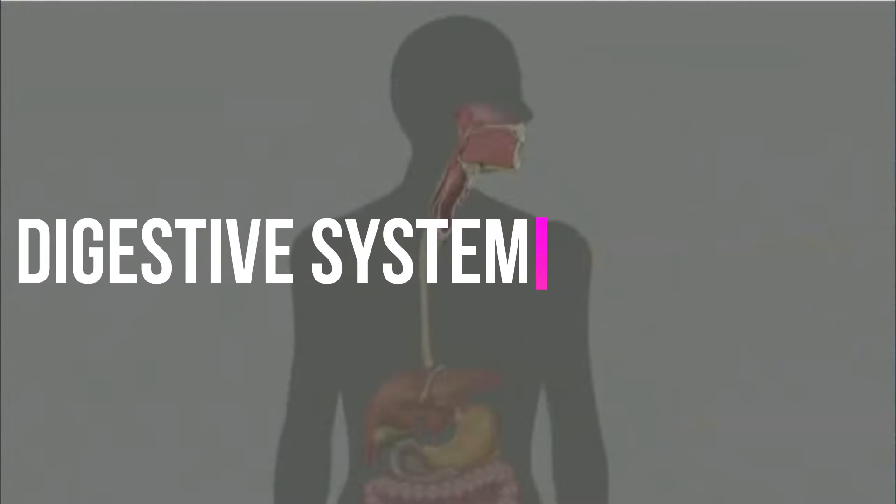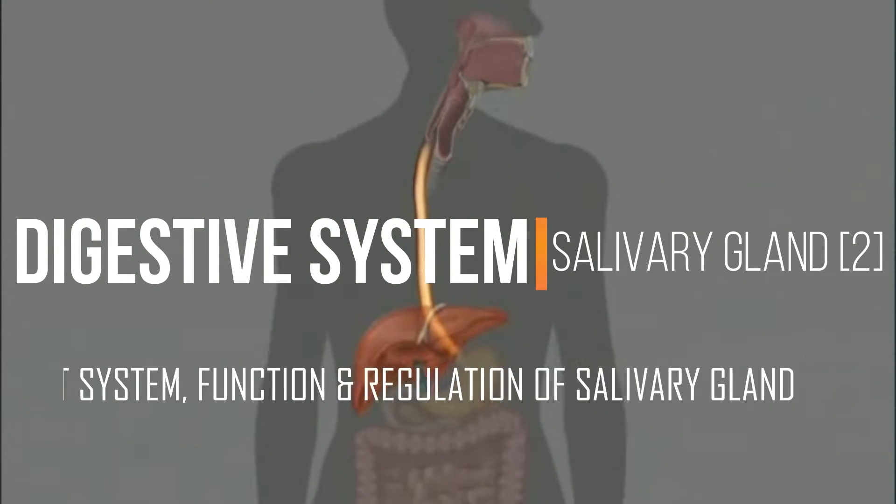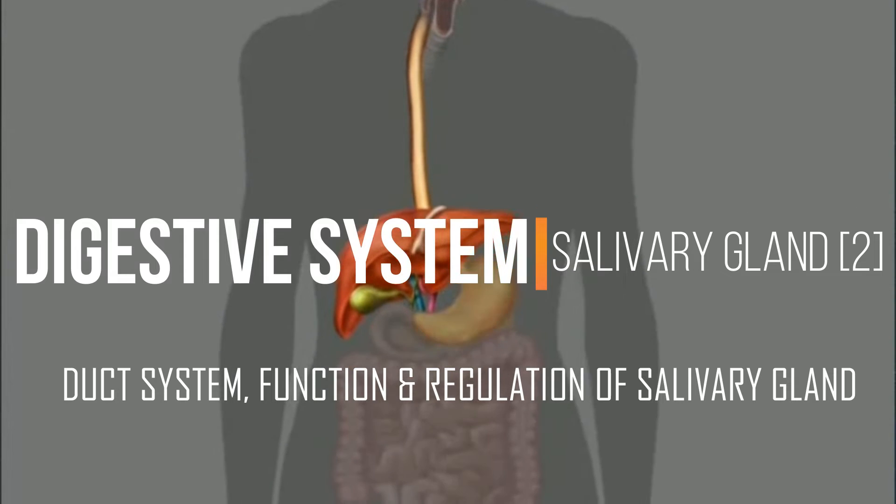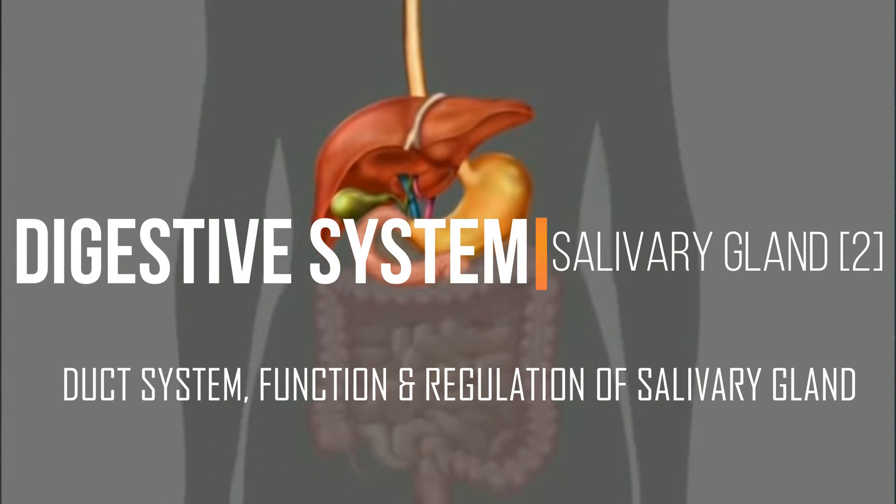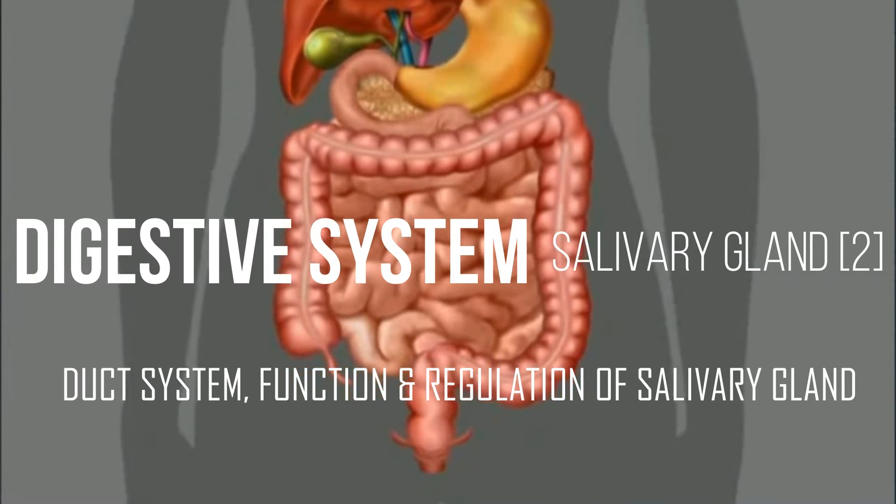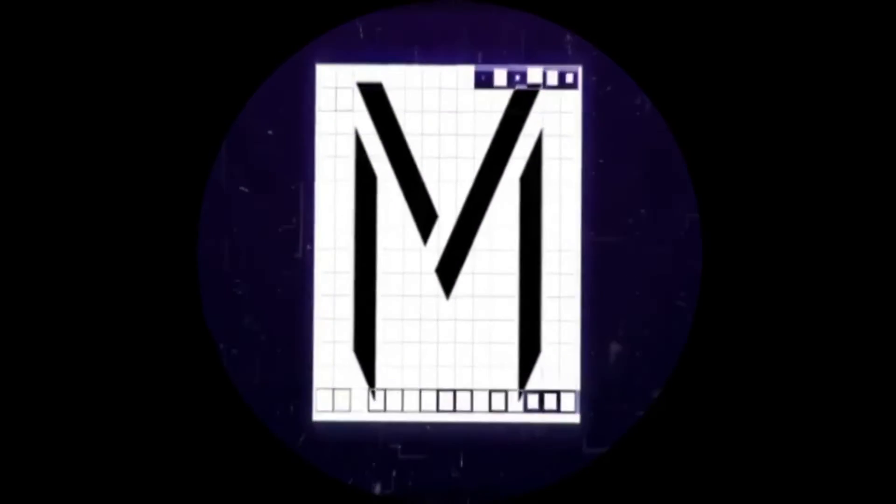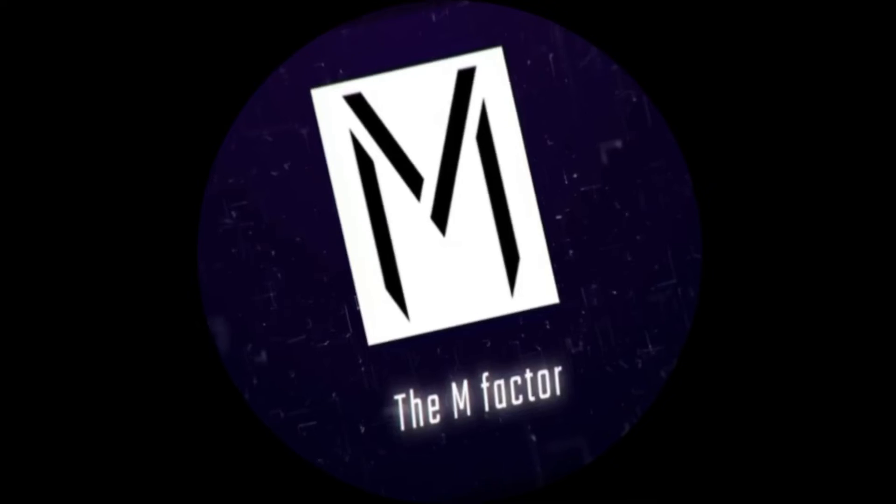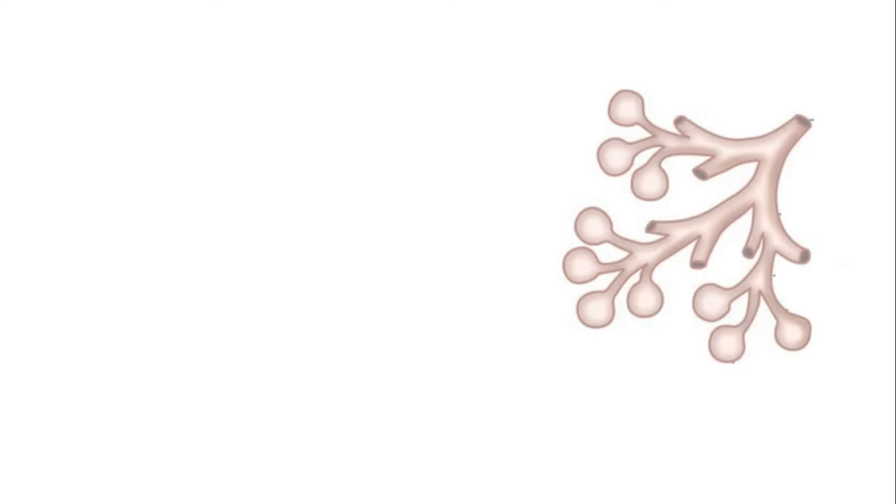Hi guys, welcome to M Factor. In the previous video we have looked upon the salivary glands and its types. Next, let's discuss the structure and duct system of the salivary gland. The salivary gland is internally divided into lobules.